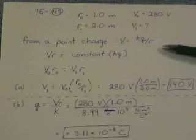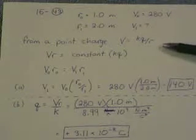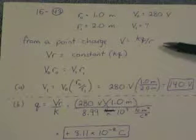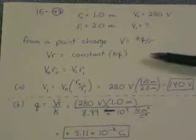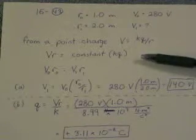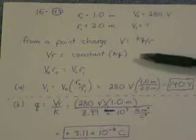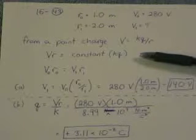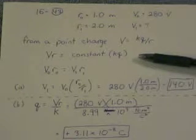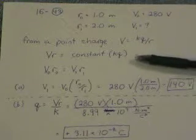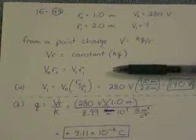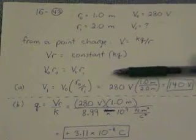We use the equation of voltage or potential difference from a point charge is equal to k times that charge divided by the distance. Let's use the technique that I've been showing throughout this year, that we gather the variables to the left and the constants to the right. So this equation becomes vr equals the constant kq. So since v times r is constant, we can have v0, r0 equals v1, r1.